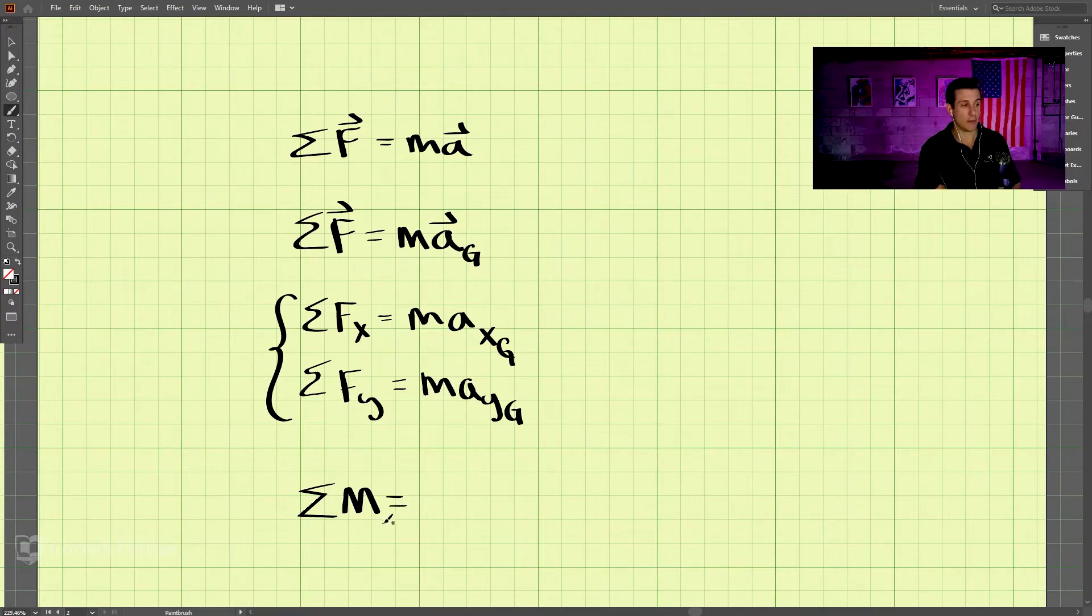Now we have the sum of the moments about point G, the center of gravity. So if we have a body that has a center of gravity G, we take the moments about that point. And that must be equal to the mass moment of inertia about the center of gravity times the angular acceleration.